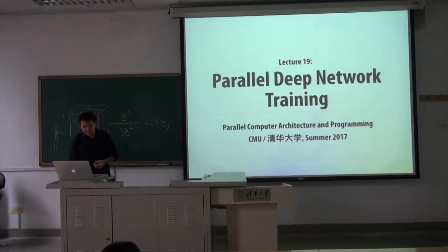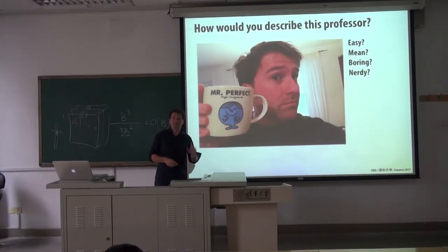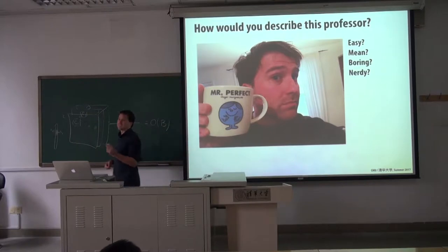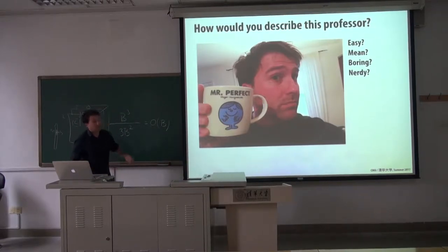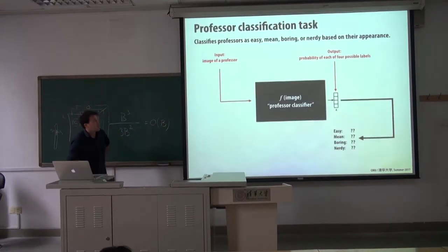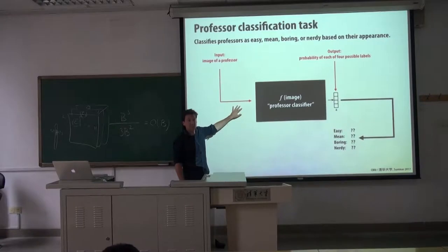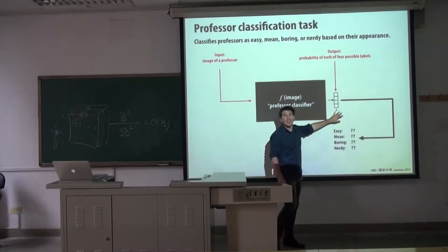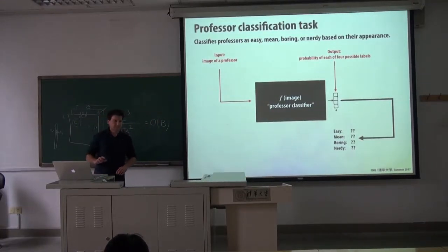So let's talk a little bit about actually learning these parameters. Here's a question for the audience: how would you describe the professor in this photo? There are four classes — you can describe the professor as easy, mean, boring, or very nerdy. That's a hard problem. But imagine that we have a classifier, a function that takes as input an image and outputs which of the four categories is most applicable to the professor in the image.